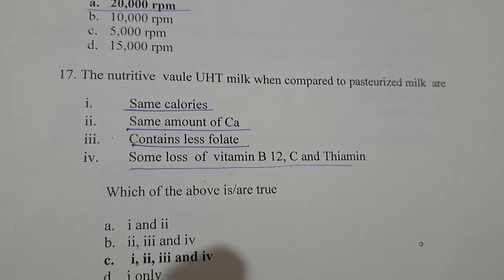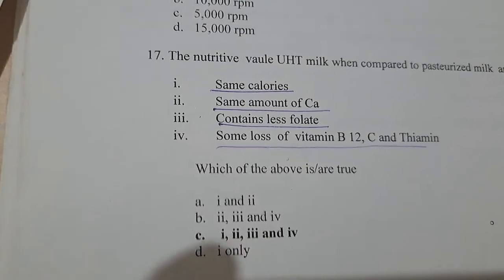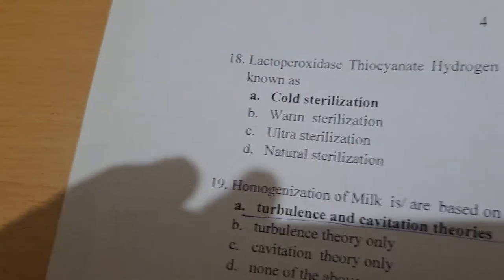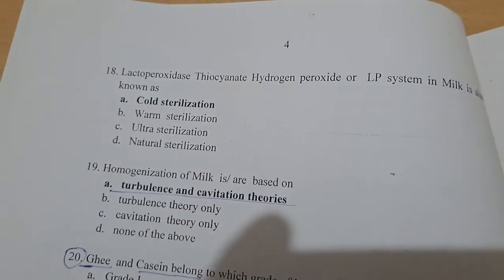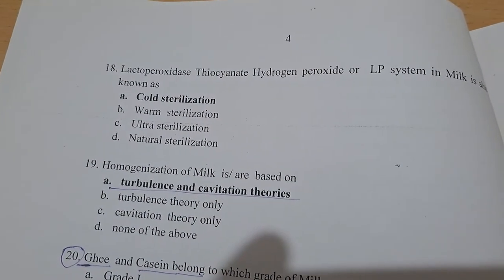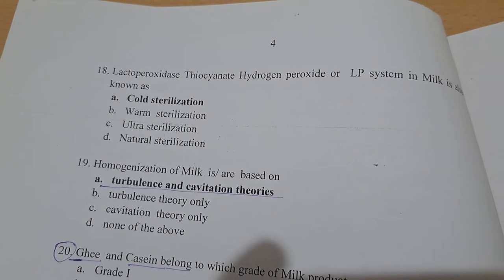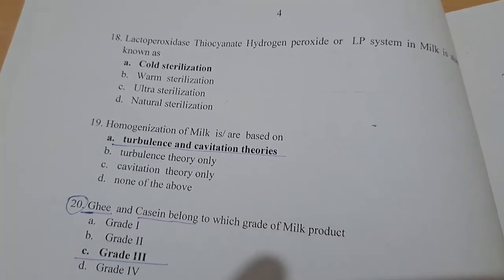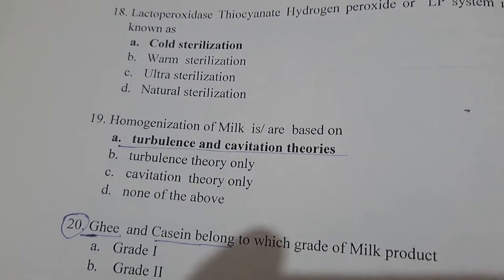Question 10: UHT milk also shows loss of vitamins B12, C, and thiamine — all of the above. The lactoperoxidase-thiocyanate-hydrogen peroxide (LP) system of milk is also known as cold sterilization.